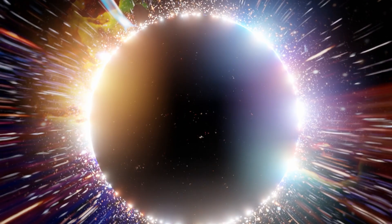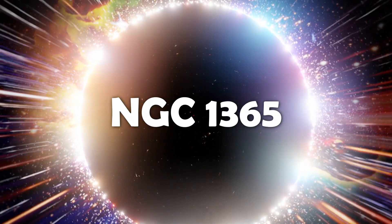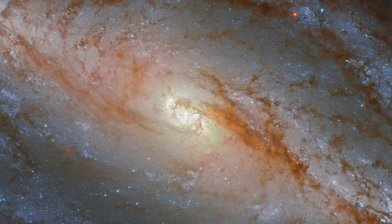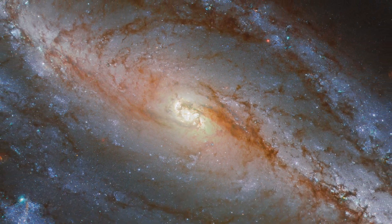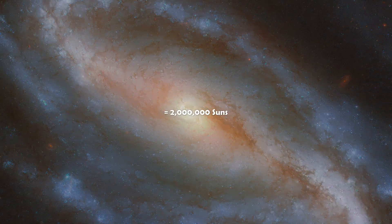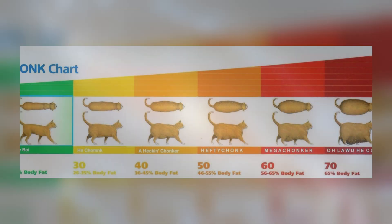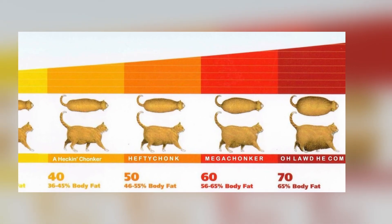The black hole in question is called NGC 1365, located at the center of the Great Barred Spiral Galaxy, about 52 million light-years away. It has 2 million suns worth of mass, which puts it somewhere towards the megachonker end of the spectrum.